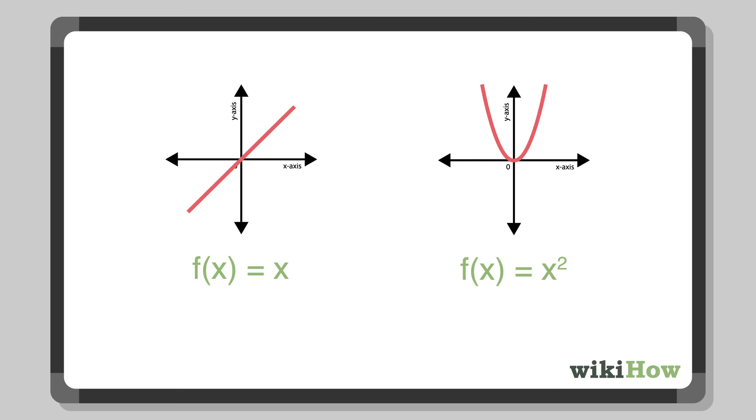For example, if you're looking at a graph of a line or a parabola, the domain would be all real numbers, since the graph continues infinitely in both directions.